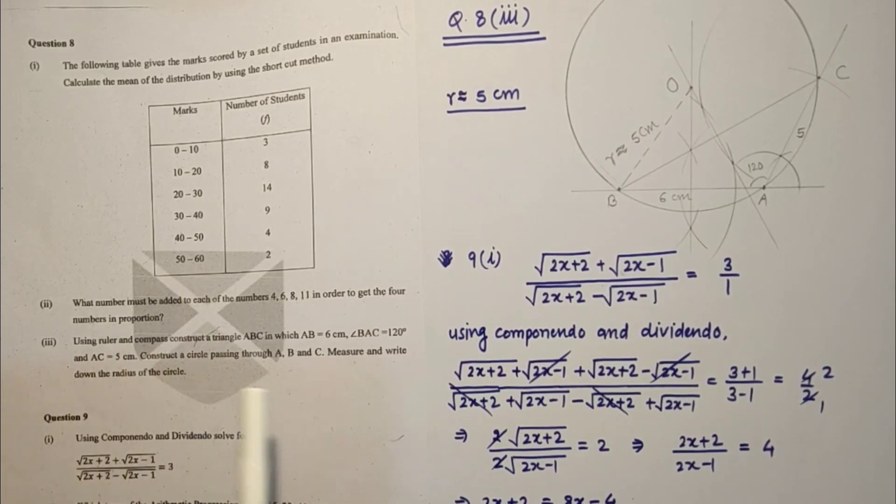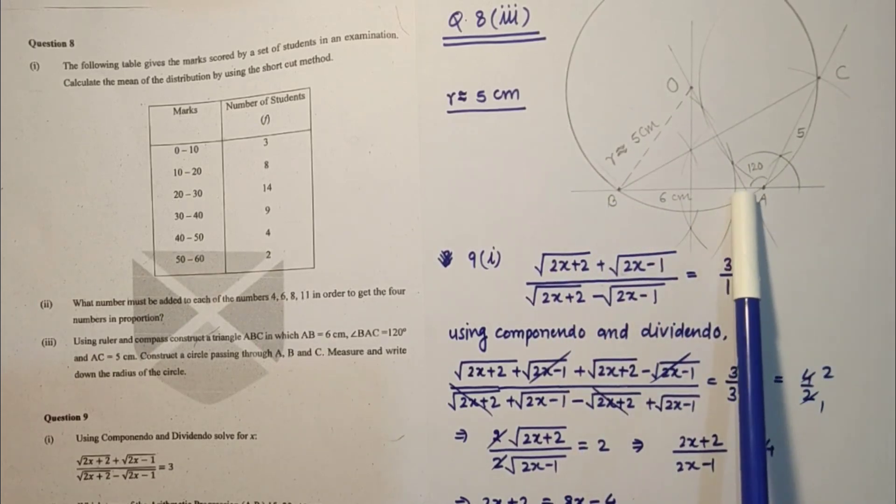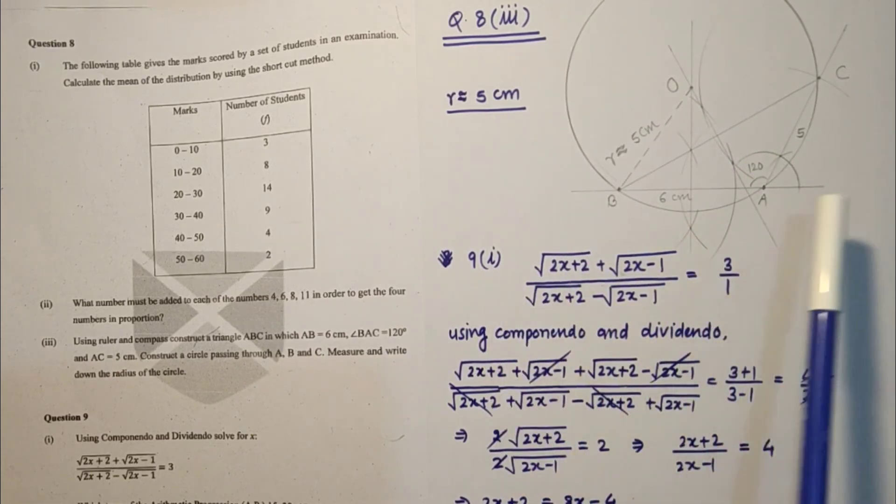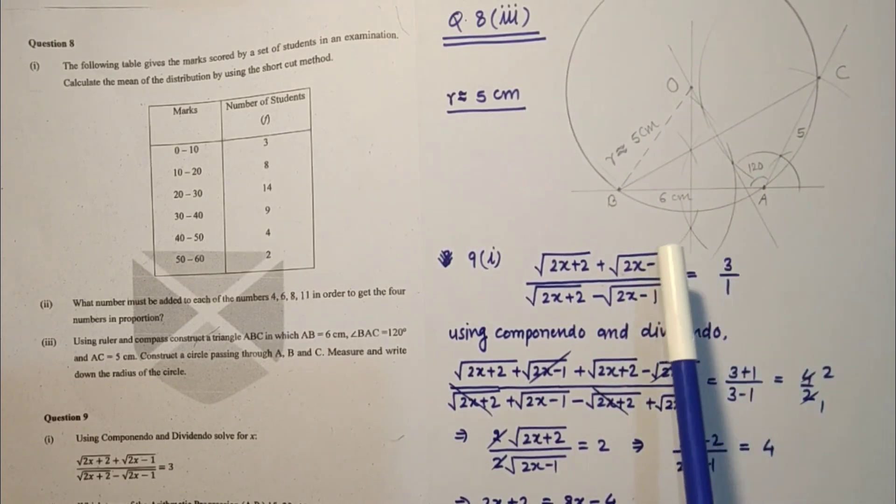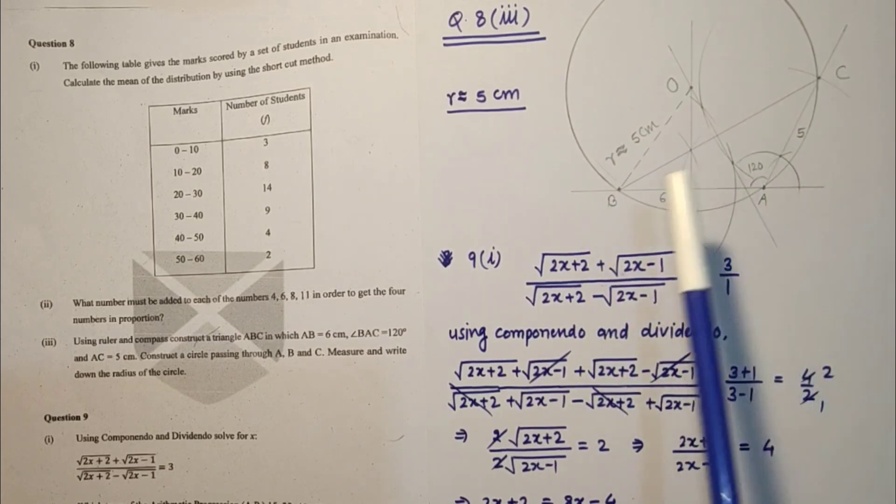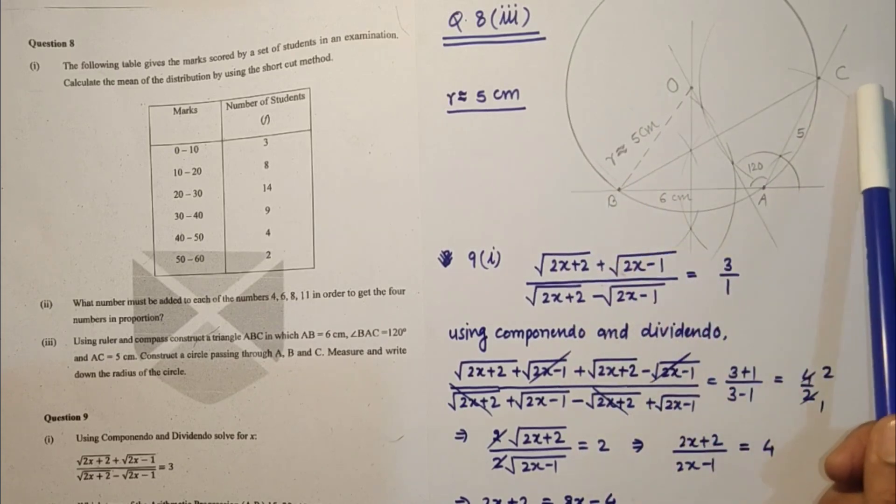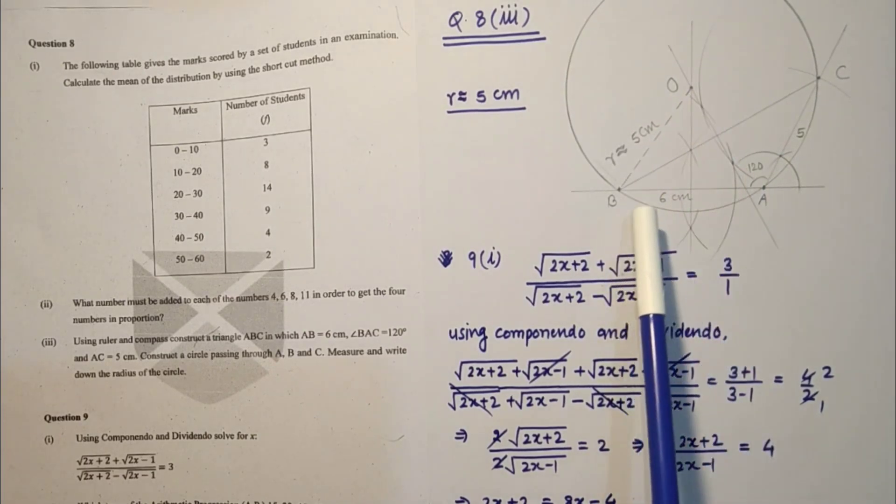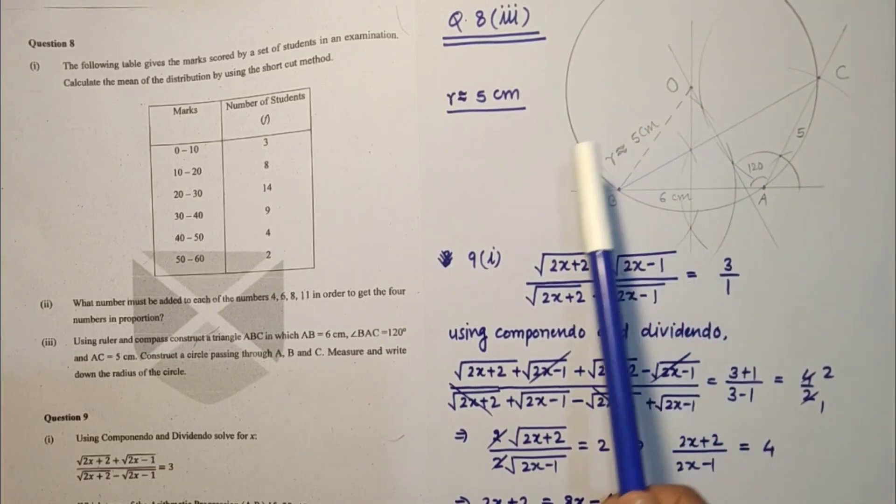Question number 8 third sub part, construction based question. Using ruler and compass construct a triangle ABC in which AB is 6 centimeters, angle BAC is 120 degrees. From here if we make 60 it will be automatically 120, and AC is 5 centimeters. After constructing this triangle, draw perpendicular bisector of any two sides. I have drawn perpendicular bisector of AB and of BC. These two are intersecting here, this is point O, this is the circumcenter. If we draw a circle it will pass through B, A, and C. Radius is coming after measurement 5 centimeters, that is the answer.